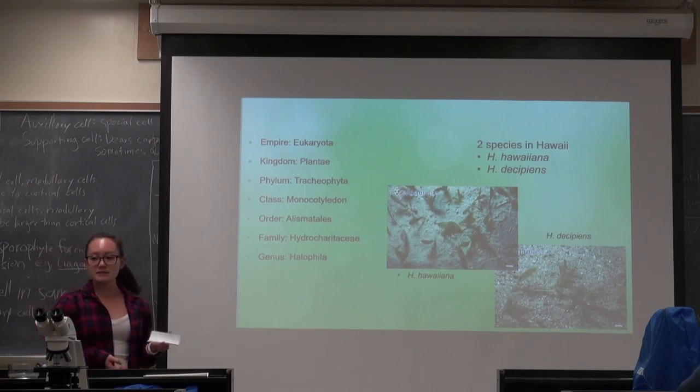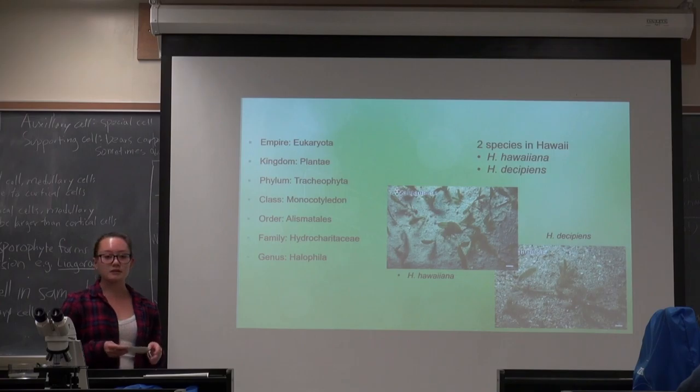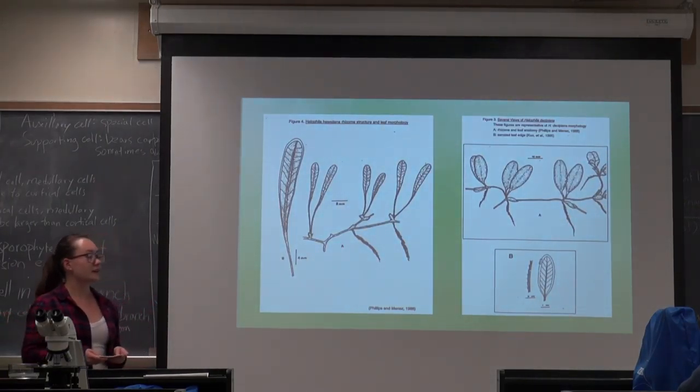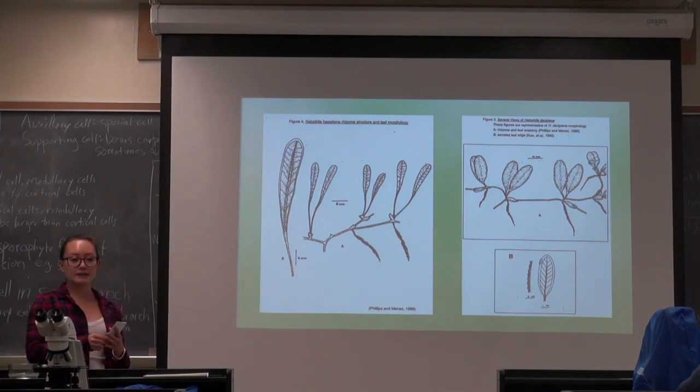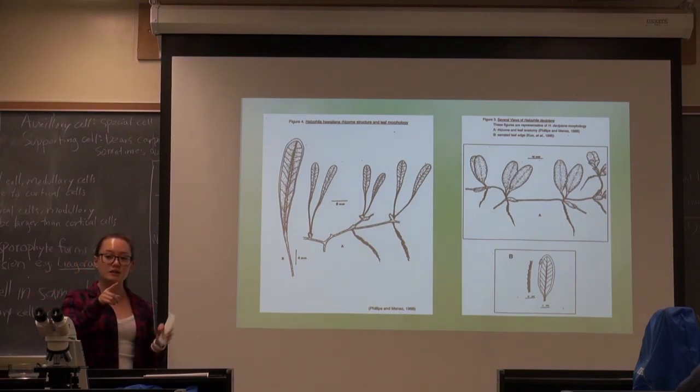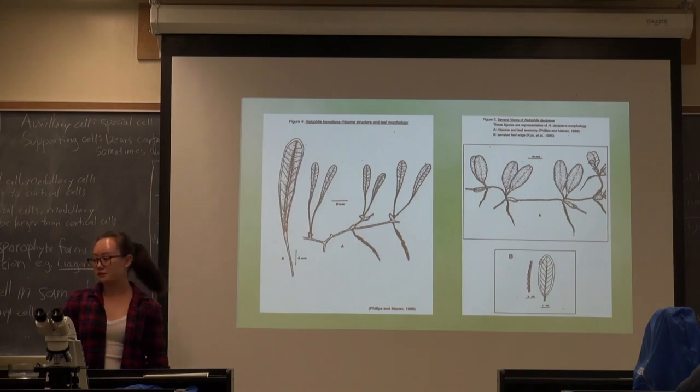And we have two species here in Hawaii: Halophila hawaiiana and Halophila decipiens. You can see both of them on the slide. The way you can tell them apart is that Halophila hawaiiana has more of a smooth outer edge to the leaves, while Halophila decipiens has a more serrated edge and they're wider at the base, whereas hawaiiana is slimmer. That's how you can decipher the two.